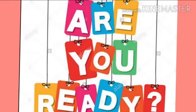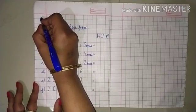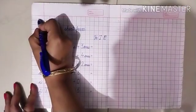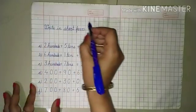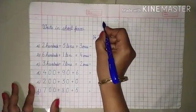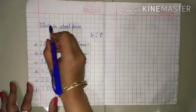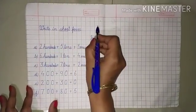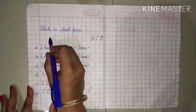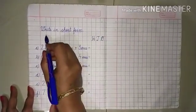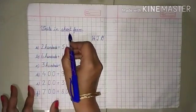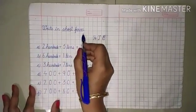Let's start. First of all, write the date here and the day here. After this, leave one line and write the heading: Short Form.